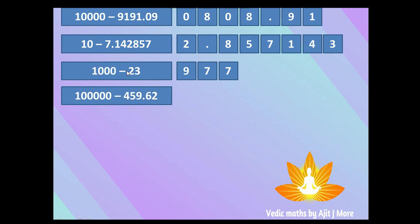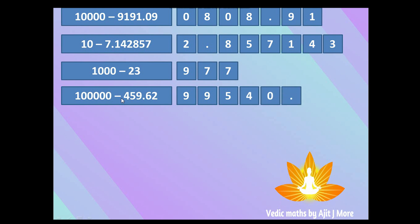One more example: one lakh (100000) minus 459.62. There are five zeros but only three digits before the dot, so we prepend two zeros to get 00459.62. Then all from nine, last from ten: 9−0=9, 9−0=9, 9−4=5, 9−5=4, 9−9=0, dot as-is, 9−6=3, 10−2=8. The complement is 99540.38.